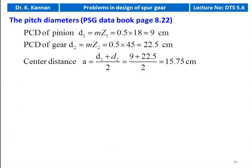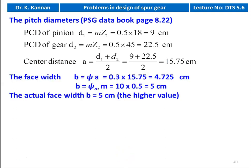We calculate the gear dimensions. PCD of pinion D1 = M × Z1 = 0.5 × 18 = 9 cm. PCD of gear D2 = M × Z2 = 0.5 × 45 = 22.5 cm. Center distance A = (D1 + D2) / 2 = (9 + 22.5) / 2 = 15.75 cm. Face width: b = ψ × A = 0.3 × 15.75 = 4.725 cm, and b = ψM × M = 10 × 0.5 = 5 cm. The higher value is 5 cm, so actual face width b = 5 cm.